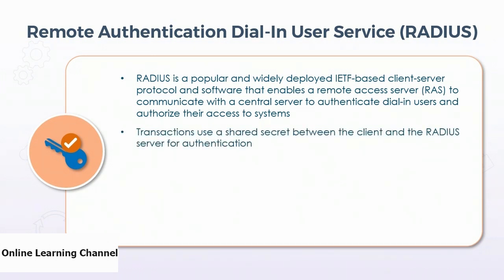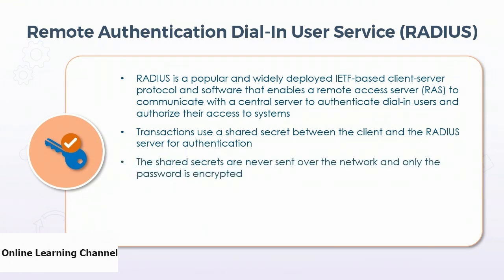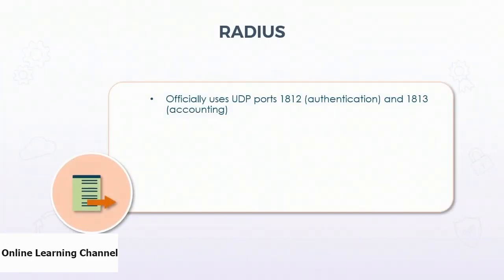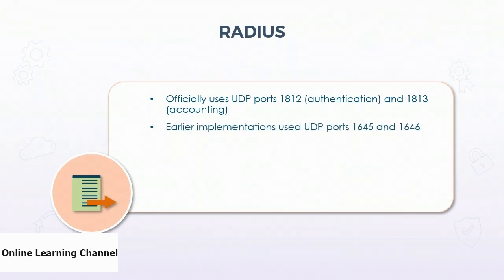RADIUS transactions use a shared secret between the client and the RADIUS server for authentication. Keep in mind that the client is the intermediate device — for example, a router, a firewall, or a wireless access point. The shared secrets are never sent over the network and only the password is encrypted. RADIUS officially uses UDP ports 1812 for authentication and 1813 for accounting. Earlier implementations used UDP ports 1645 and 1646.